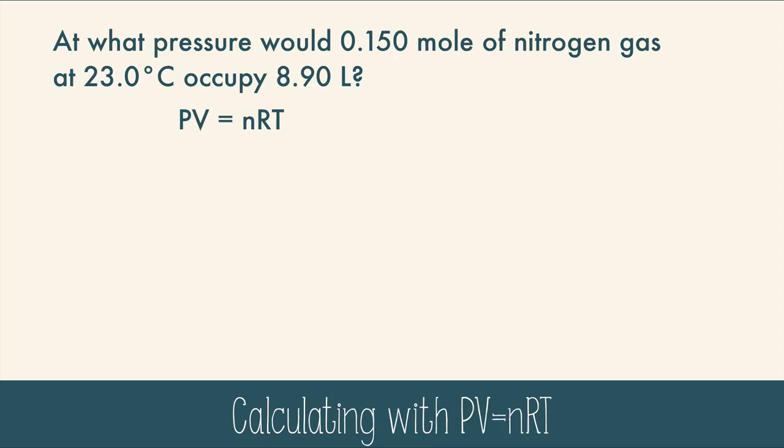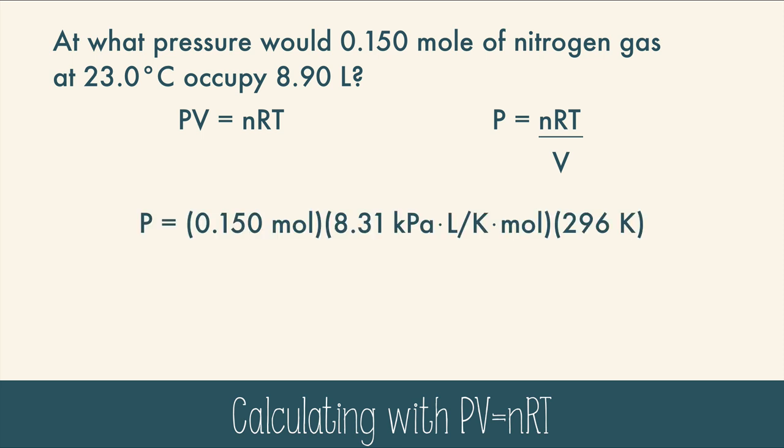Let's try a PV=nRT problem. At what pressure would 0.15 moles of nitrogen gas at 23 degrees Celsius occupy 8.9 liters? Well, we're going to need to use PV=nRT, but we're trying to find pressure, which means doing a little rearranging. You just have to divide both sides by V. Now we plug in the data, and I chose 8.31 kilopascal liters per kelvin mole, but you could have chosen any of the other R values because it didn't specify what type of pressure unit was necessary for this problem. So I picked 8.31. Now you calculate it out, and you get 41.5 kilopascals, and that's it. PV=nRT is actually one of the easier equations to use.